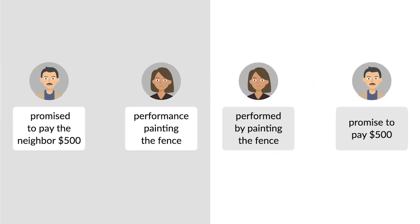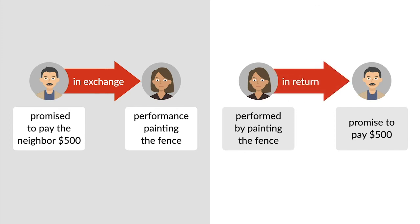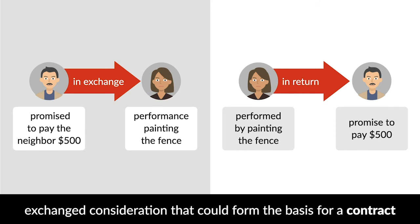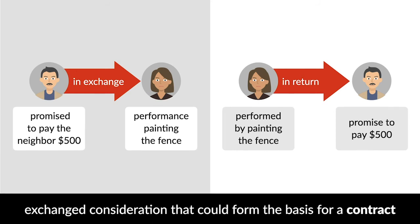The lawyer promised to pay the neighbor $500 in exchange for the neighbor's performance in painting the fence. Likewise, the neighbor performed by painting the fence in return for the lawyer's promise to pay her $500. Thus, the lawyer and the neighbor exchanged consideration that could form the basis for a contract.